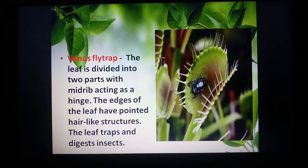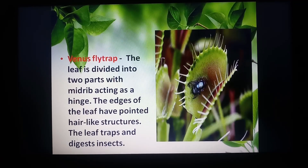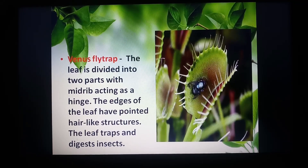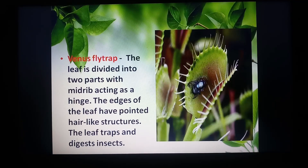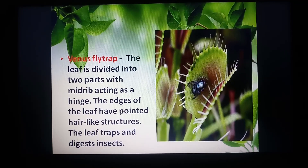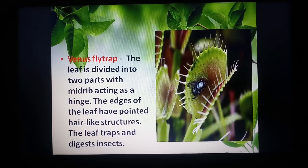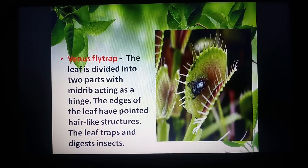In the case of venus flytrap, the leaf is divided into two parts with the midrib acting like the hinge of a door. At the tip, at the margin of the leaf, you will see pointed structures. These hair-like structures have sensory cells on them. As soon as an insect touches any part of the leaf, the leaf senses the presence of the insect, closes, and traps the insect, followed by digesting the nutrients from the insect's body.